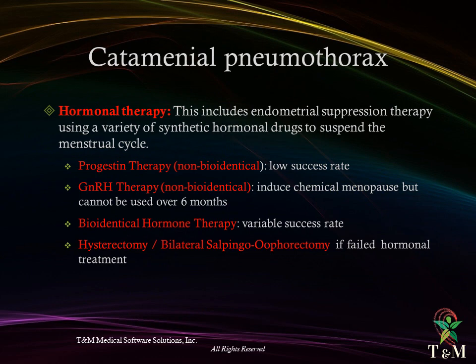Hormonal therapy includes endometrial suppression therapy using synthetic hormonal drugs to suspend the menstrual cycle. Progestin therapy (non-bioidentical) showed low success rate. Gonadotropin-releasing hormone therapy (non-bioidentical) induces chemical menopause but cannot be used for over 6 months. Bioidentical hormonal therapy showed variable success rate. Hysterectomy and bilateral salpingo-oophorectomy are considered only if hormonal therapy fails.